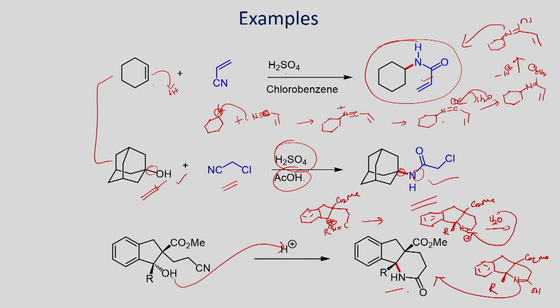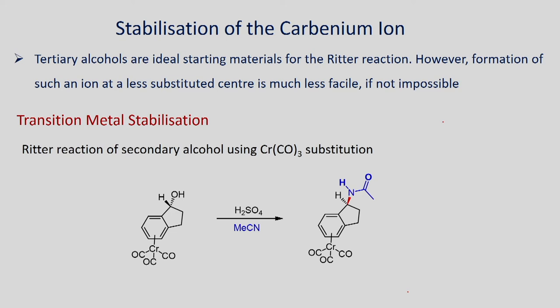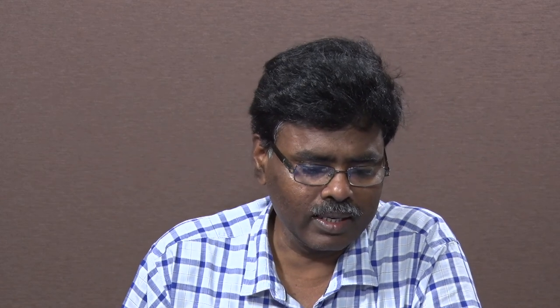These are examples of the Ritter reaction. Tertiary alcohols are ideal substrates that can be readily converted into corresponding amides. We also have seen substituted alkenes can be converted into the corresponding amide when reacted with nitrile in the presence of acid as catalyst. Here an example shows the reaction of a secondary alcohol in the presence of sulfuric acid, reacted with acetonitrile which has a chromium tricarbonyl substituent, to give the corresponding amide.